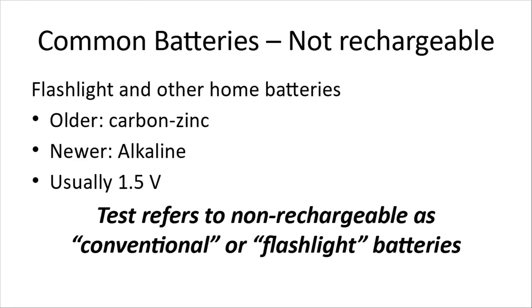The most common batteries are not rechargeable. The test material was written back in the dark ages, and they'll talk about flashlights and other home batteries — the older ones being carbon zinc. You hardly hear anybody say that anymore; they'll just say older batteries. The vast majority of newer batteries are alkaline chemistry and are usually 1.5 volts — double A's, triple A's, C cells, D cells. The test refers to non-rechargeable batteries as conventional or flashlight batteries, whether they're alkaline or carbon zinc.